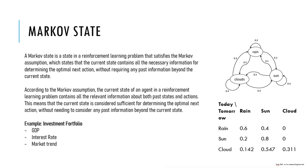A Markov chain model is a mathematical system that transitions from one state to another according to certain probabilities. For example, given that today is sunny, what is the probability that it will be rainy or cloudy tomorrow? A Markov chain model can answer this question by using a transition matrix that specifies the probability of going from one state to another. The matrix shown here displays the probability of going from one state to another in one day.